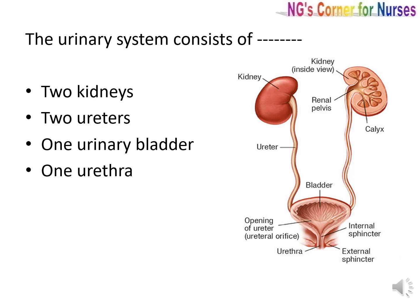The urinary system consists of a pair of kidneys, a pair of ureters, one urinary bladder, and one urethra.